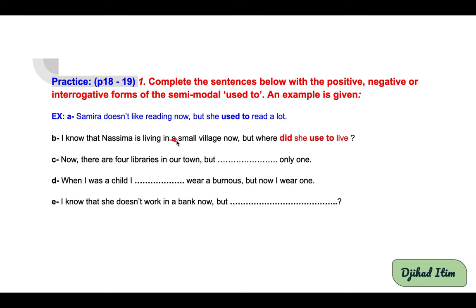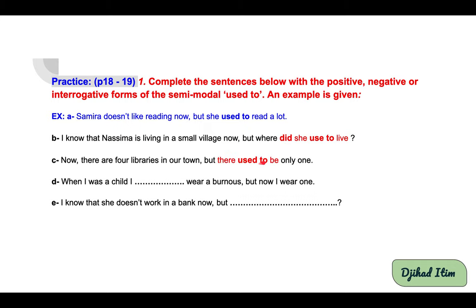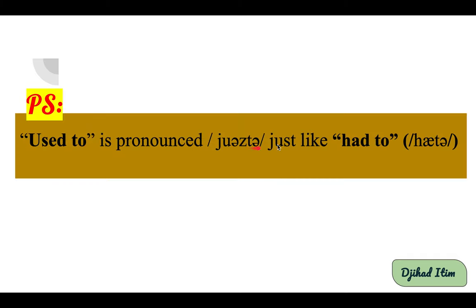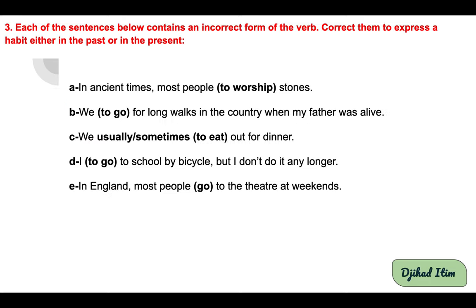Corrections: B — I know that Nesima is living in a small village now, but where did she use to live? C — Now there are four libraries in our town, but there used to be only one. D — When I was a child I didn't use to wear a burnous; now I wear one. E — Did she use to work in a bank before? Note: 'used to' is pronounced like 'yoosta,' just as 'had to' is pronounced 'hasta' — with a schwa sound.